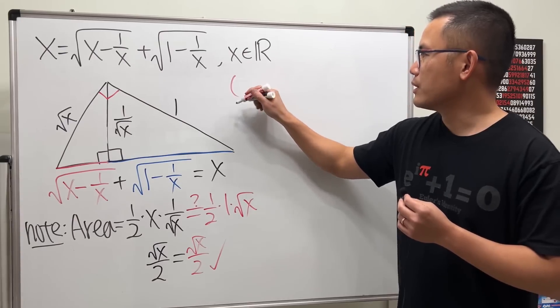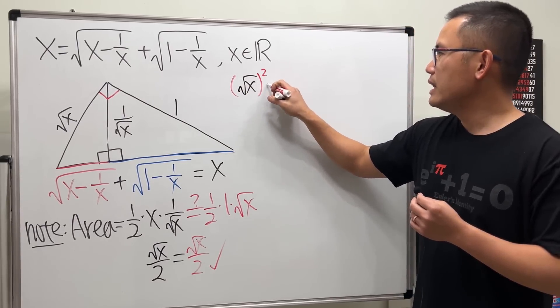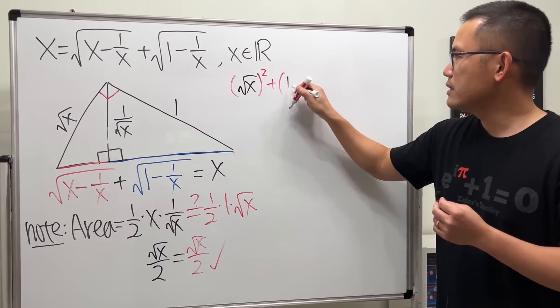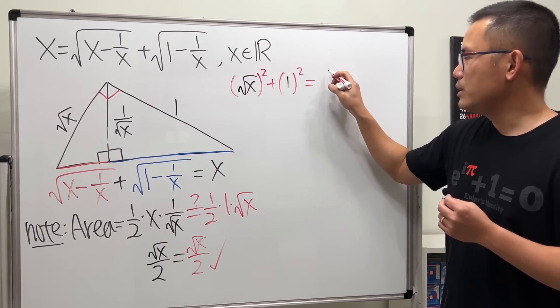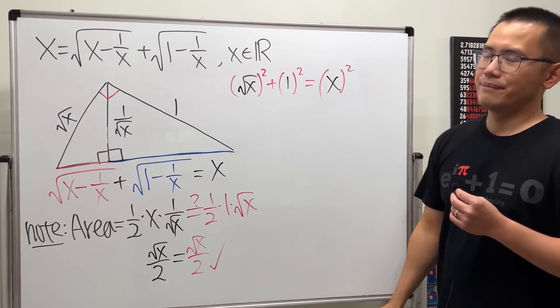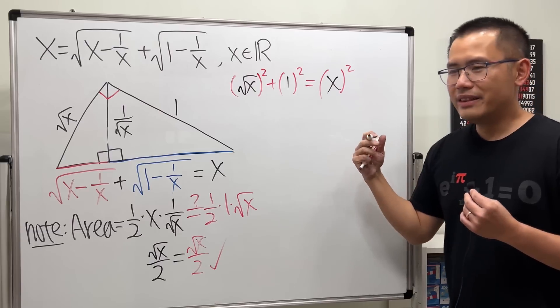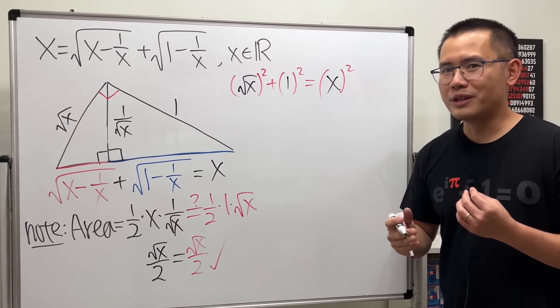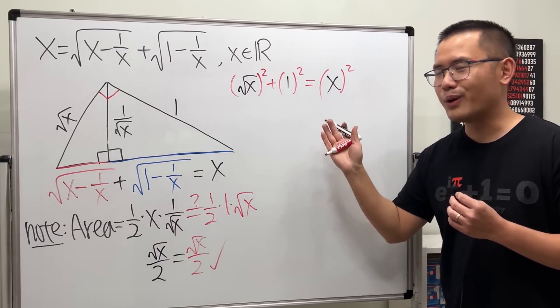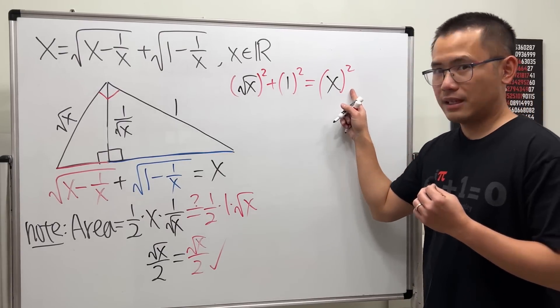And of course, let's just go ahead and square this term. So square root of x squared—that—and then we add this thing squared, and that has to be equal to this squared. And many of you guys, I believe, have noticed that this is going to give us the golden ratio. This is the golden quadratic equation.